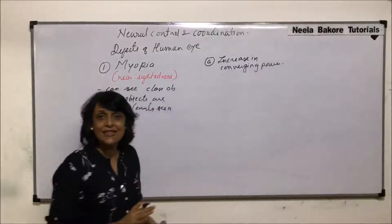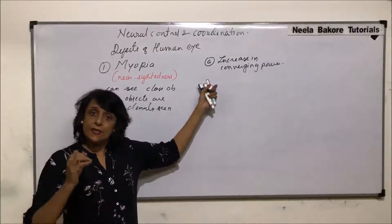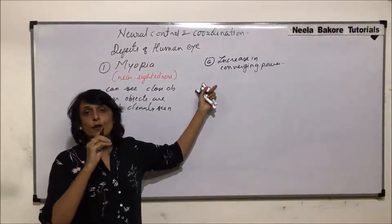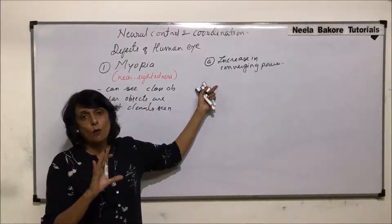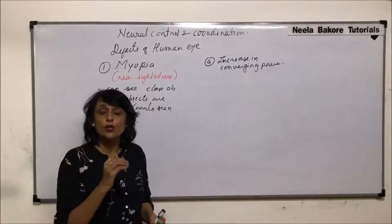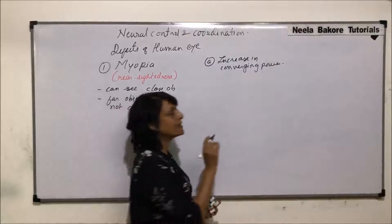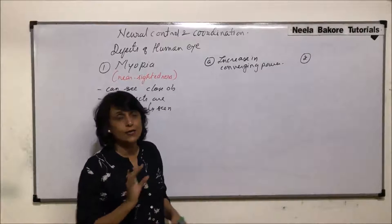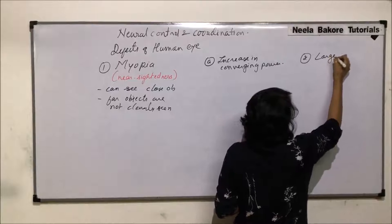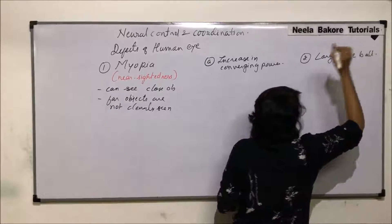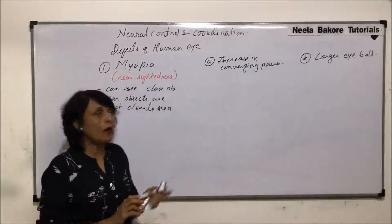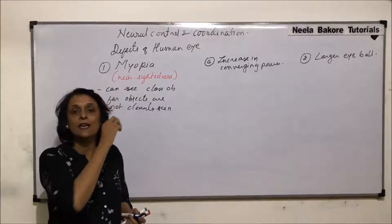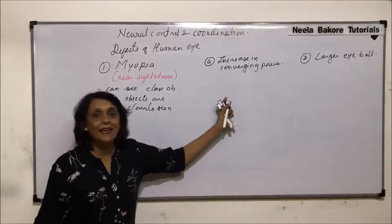The normal lens in our eye is a converging lens, a bi-convex lens. When it focuses the image on the retina with normal power, everything is fine. But here, its converging power has increased. The second reason is that the size of the eyeball is larger. These are the two reasons responsible for myopia.